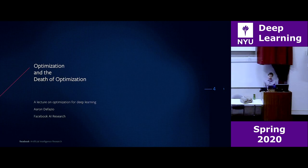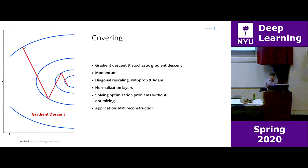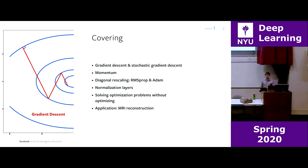I will be talking about optimization, and if we have time at the end, the death of optimization. Optimization is at the heart of machine learning, and some of the things I'm going to be talking about today will be used every day in your role as an applied scientist, research scientist, or data scientist. I'm going to focus on the application of these methods, rather than the theory behind them.